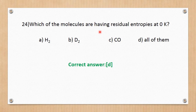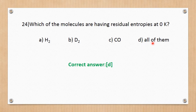Question number 24. Which molecules have residual entropy at 0 Kelvin? Options are H2, D2, CO, or all of these. H2, D2, and CO are exceptions to the third law of thermodynamics and have residual entropy at 0 K. The correct answer is D — all of them.